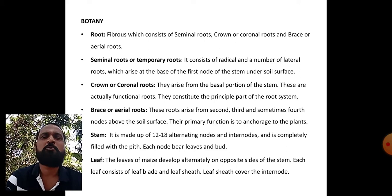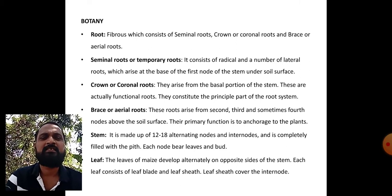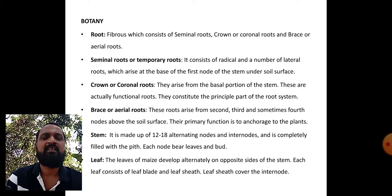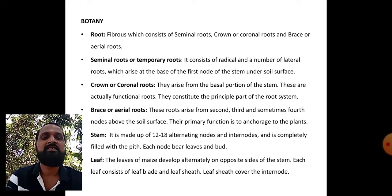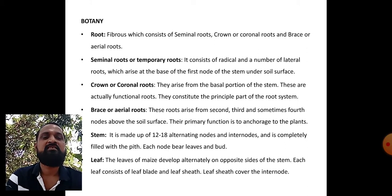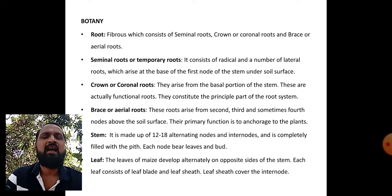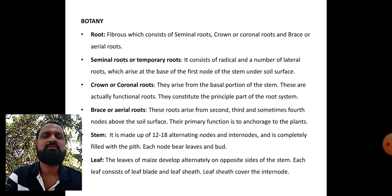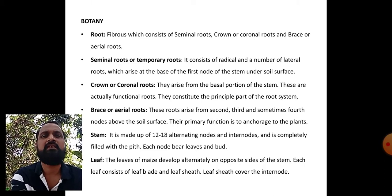The stem is made up of 12 to 18 alternating nodes and internodes and is completely filled with pith. Each node bears a leaf and bud. The leaves of maize develop alternately on opposite sides of the stem. Each leaf consists of a leaf blade and leaf sheath; the leaf sheath covers the internode, and parallel venation is observed in maize.